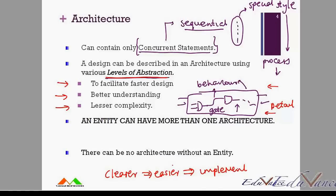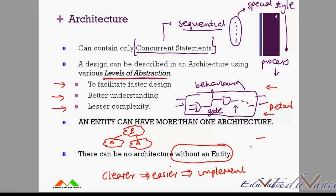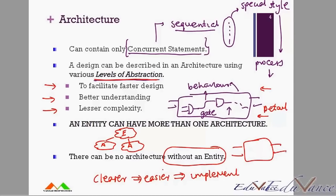Now a few more rules: one entity can have more than one architecture. As I said in the first lecture, you can have one entity which has multiple architectures, but you cannot have an architecture without an entity. Means you cannot tell the circuit what it's going to do without you knowing what are the inputs and outputs.